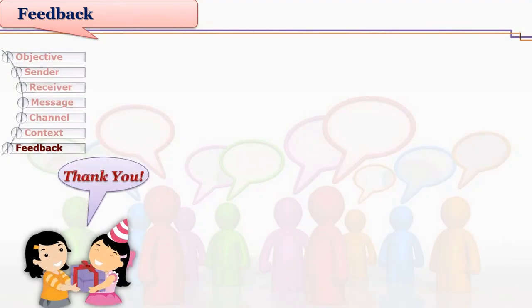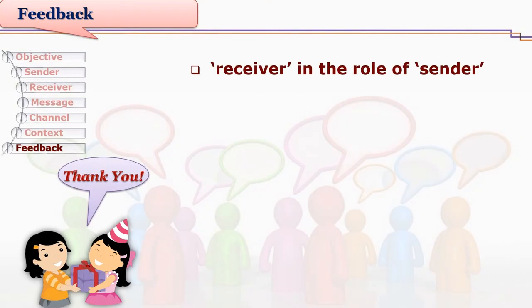While giving feedback, the receiver is always in the role of a sender. Whenever a sender sends any message to a receiver, the receiver's reaction and response to it is feedback. Now while giving this feedback, the receiver selects a message — so feedback itself becomes a message. The receiver chooses some channel and mode, and passes on this feedback to the sender.